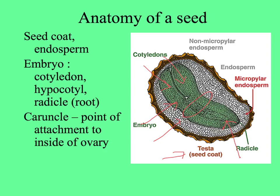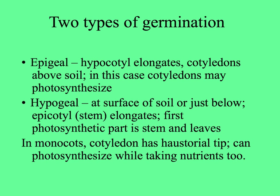This must be a dicot — it has two cotyledons. The other thing to point out here is the caruncle, which is where the seed attaches to the ovary. So there are two ways seeds germinate: either keeping their cotyledons above the soil or at the surface, or below the surface. This is called epigeal germination, where the part below the cotyledons elongates and the cotyledons are lifted above the soil.